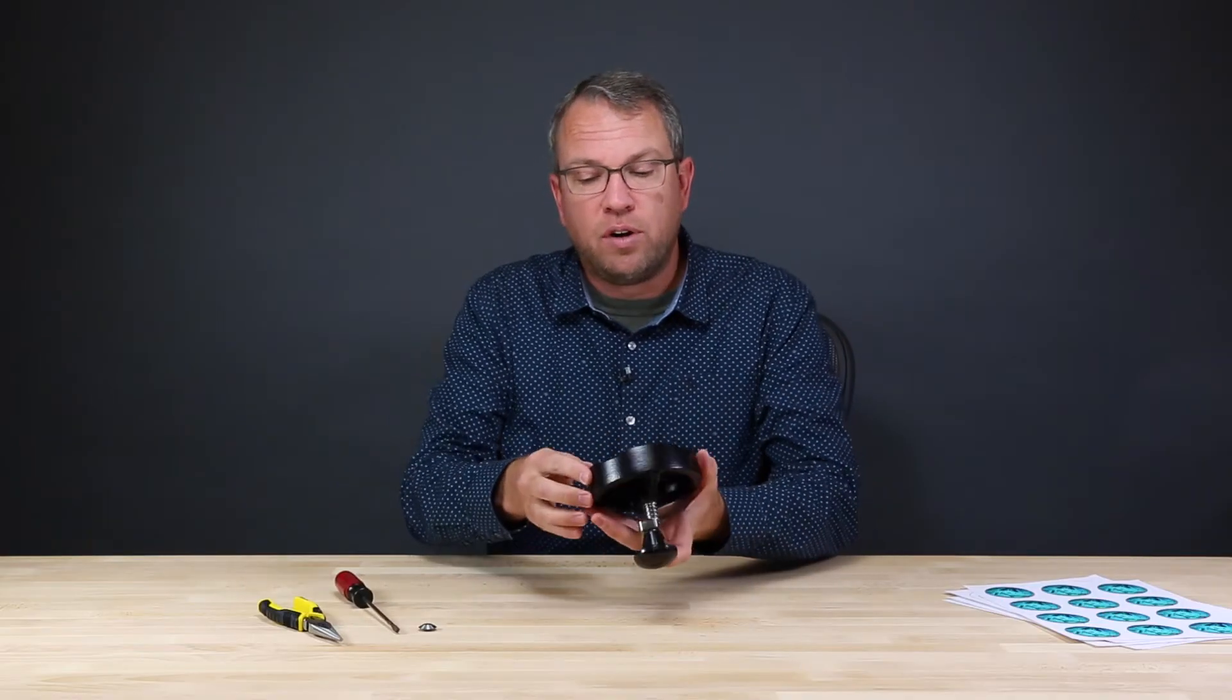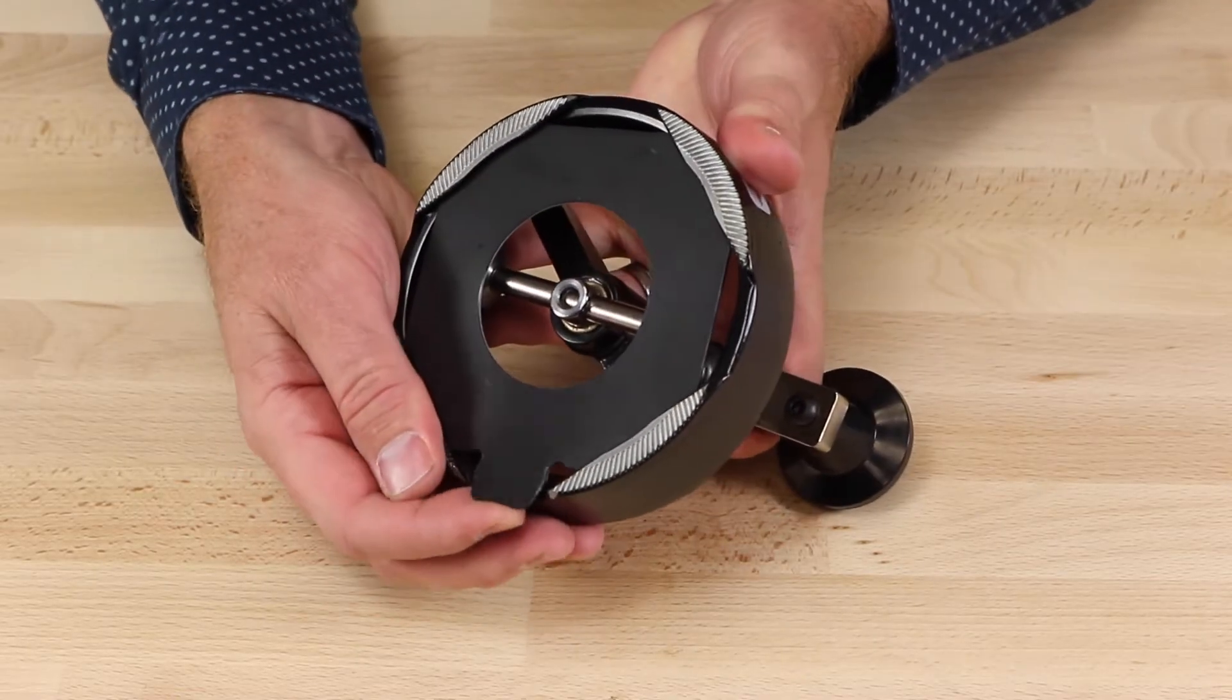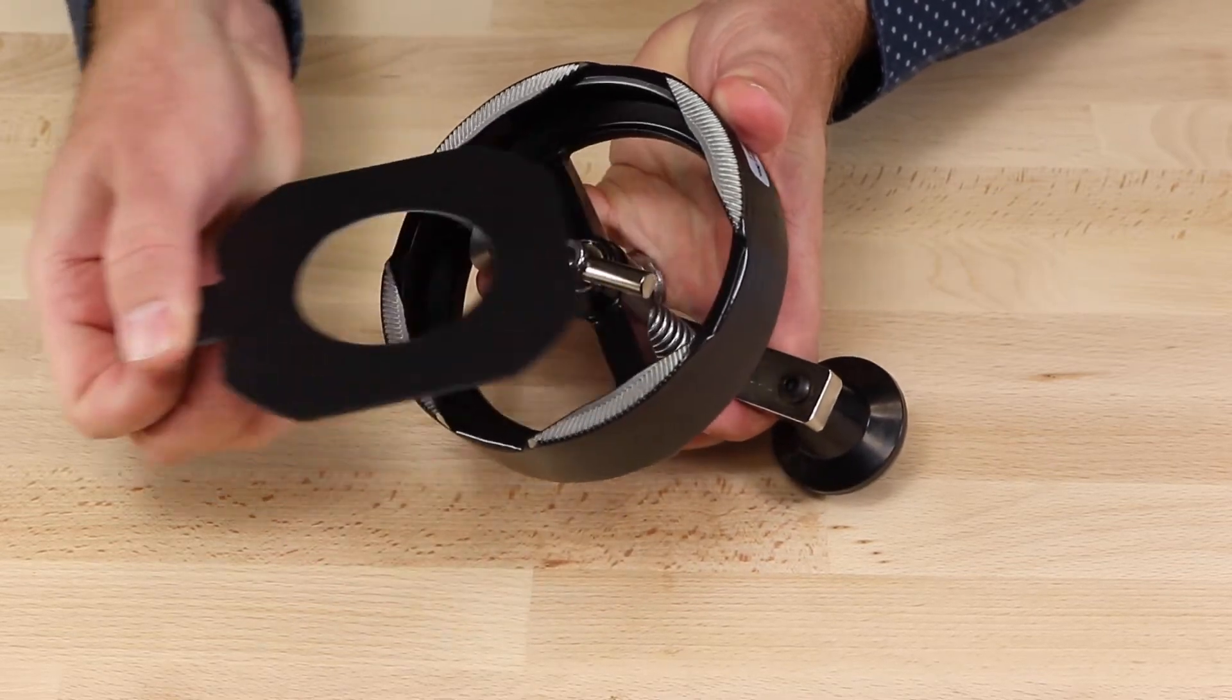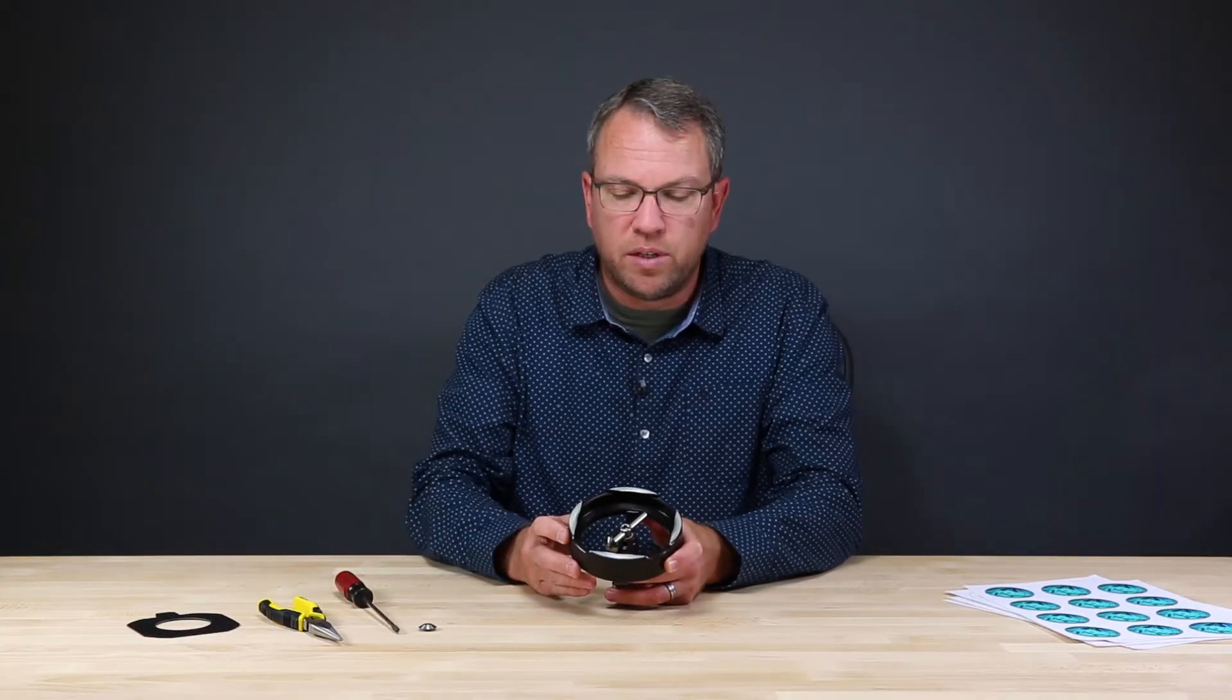To get started, I'll turn the machine over and remove the centering template. I'll just lift up on the tab and rotate until it comes free so I can remove that centering template.